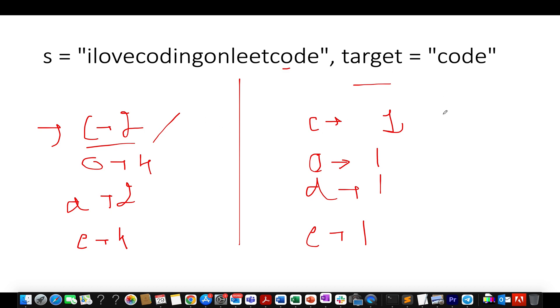So two divided by one gives me two. With respect to C, two instances of 'code' can be generated. Let's move ahead. Four divided by one gives you four. So with respect to O, four instances of 'code' can be generated. Let's proceed ahead.